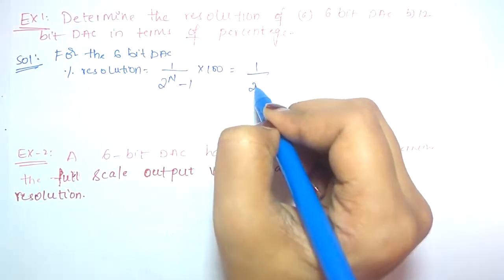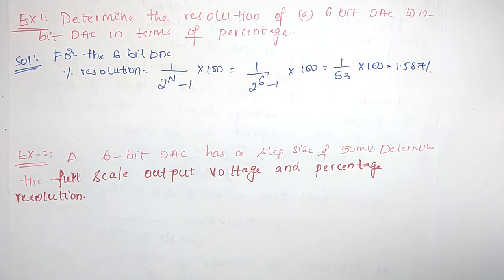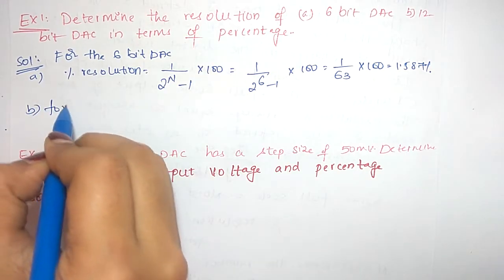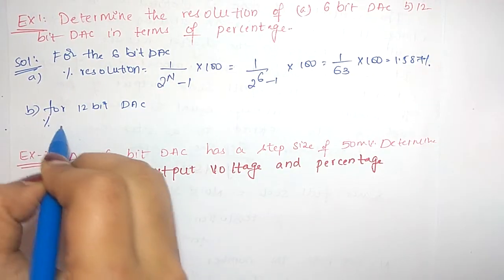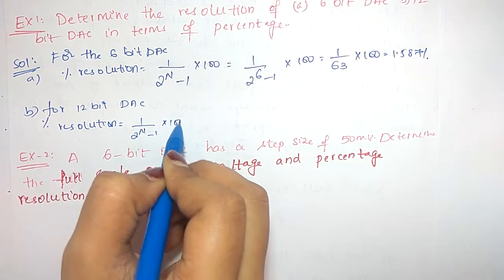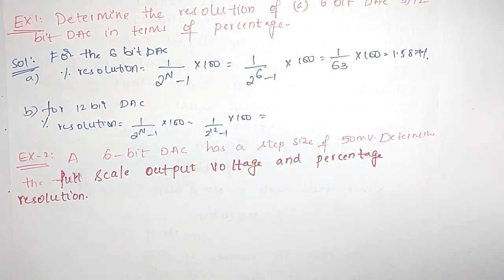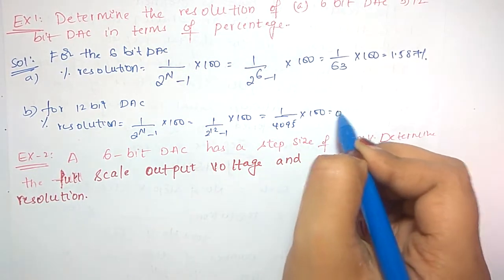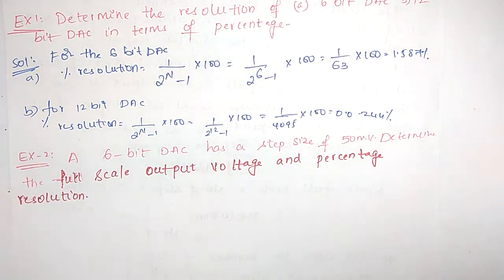So for the 6-bit DAC it is 1 divided by (2 power 6 minus 1) multiplied by 100, which gives 1.587%. Similarly, for the 12-bit DAC, percentage resolution equals 1 divided by (2 power 12 minus 1) into 100, which is 1 divided by 4095 into 100, giving 0.0244%.